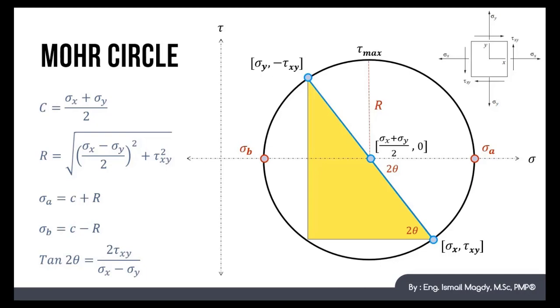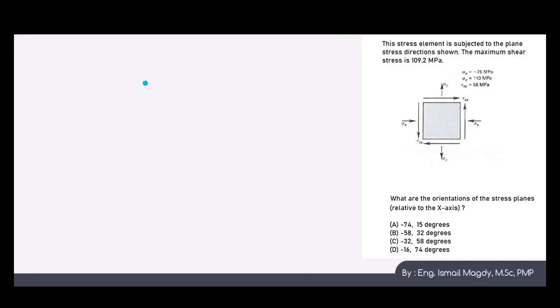So now, let's have an example. We have this element here, and we have the sigma x, sigma y, and tau xy in all directions. We want to know the orientation of the stress plane relative to the x axis. Because if we want the orientation, it means that we need to get theta.